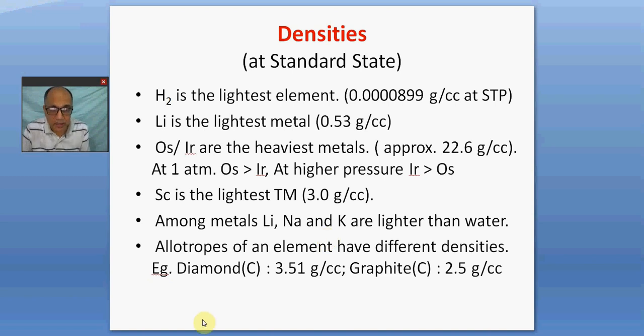Again, if some elements exist in more than one allotrope, each allotrope has a different density. For example, carbon has two. Out of the three crystalline allotropes, diamond has a density of 3.51, while graphite is 2.5. So it varies for different allotropes of a single element.